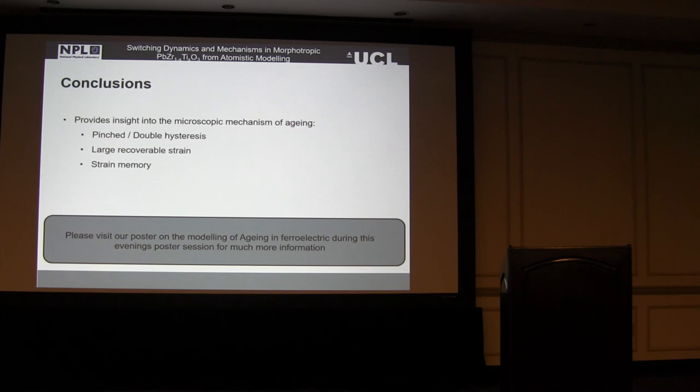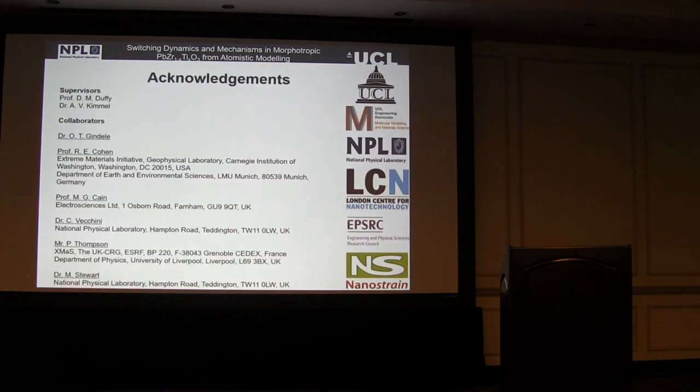To conclude this, this model on aging provides insight into the microscopic mechanisms of aging. It reproduces the pinching double hysteresis, the large recoverable strain, and the asymmetric strain memory. We've got lots more information, other results on my poster, please look forward to having a chat. Thank you very much for listening. And I'd also like to acknowledge my supervisors, my collaborators, and those that can be thanked. Thank you very much.